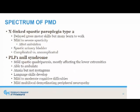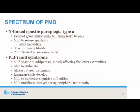The X-linked spastic paraplegia is milder. They have delayed gross motor skills, but many do learn to walk. They have mild to severe spasticity, which can affect ambulation. They also have upper motor neuron bladder symptoms. It can be complicated versus uncomplicated. Complicated spastic paraplegia is similar to the other phenotypes of PMD, in which patients have limb and trunk ataxia as well as nystagmus and mild cognitive impairment. Whereas the uncomplicated type really doesn't have any other central nervous system involvement other than spastic paraparesis and urinary bladder.